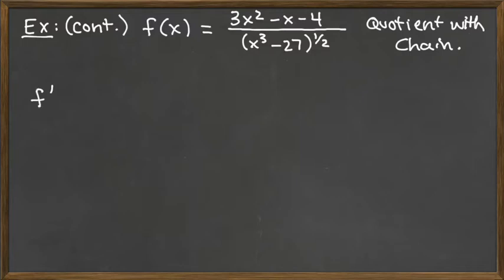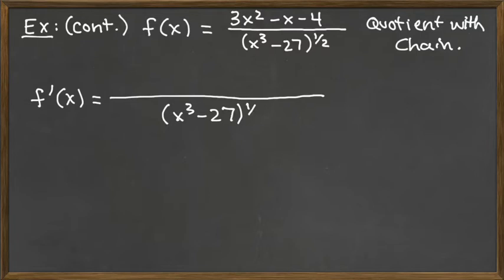So we're ready to take the derivative. We say f prime of x equals – and the quotient rule here, I always go ahead and draw my line and I write the bottom squared because otherwise sometimes I work so hard on the top I forget about the bottom. So my bottom here is x cubed minus 27 to the one half power, and we're going to square it. So that's what the bottom is going to be.